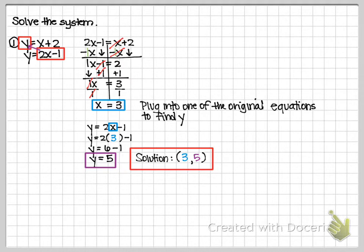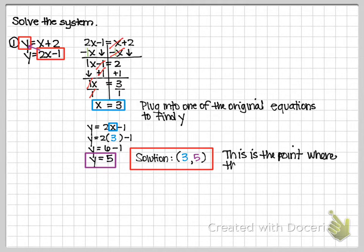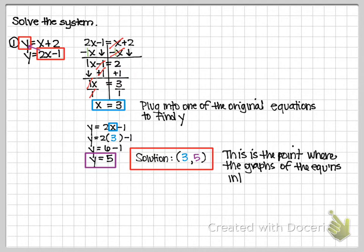The solution to a system is a point — you've got to write it as a point. A point is always X comma Y, so put the X value first: we got 3. Put the Y value second: we got 5. This is our answer: (3, 5). Ultimately, what this says is that if I were to graph it, those two lines would intersect at the point 3 comma 5 — that is where the graphs of the given equations intersect.